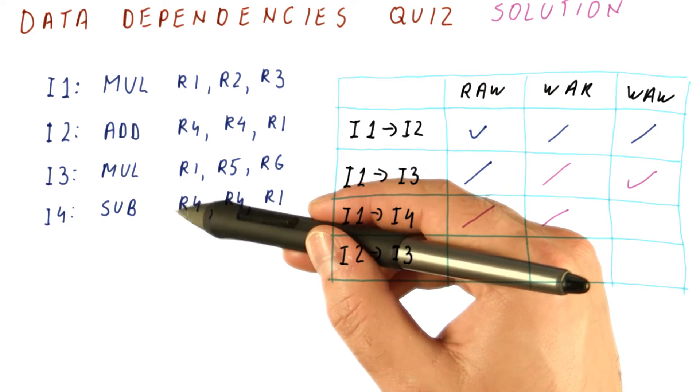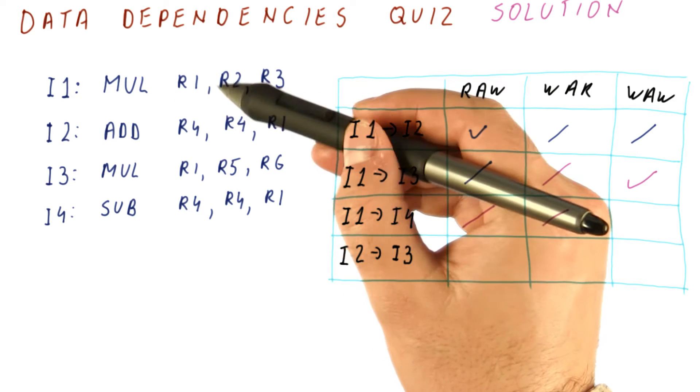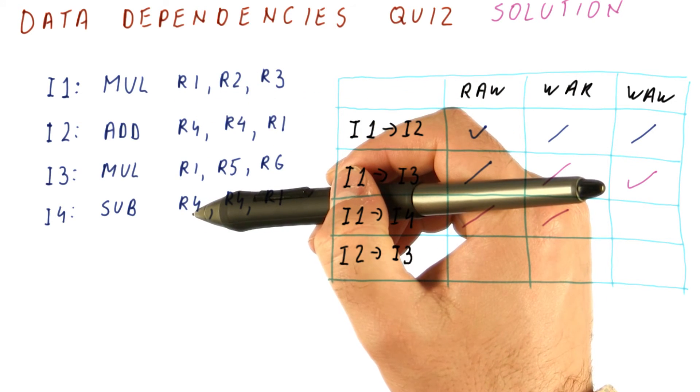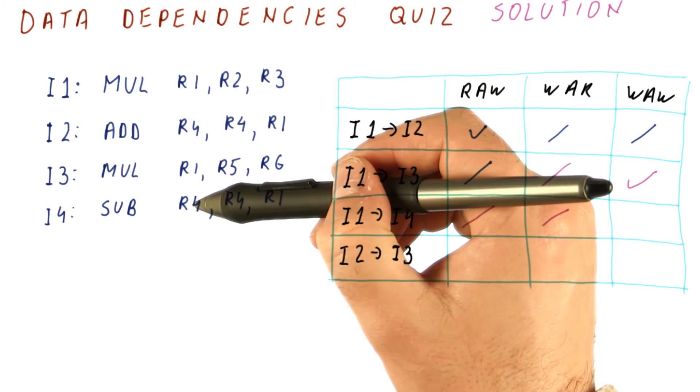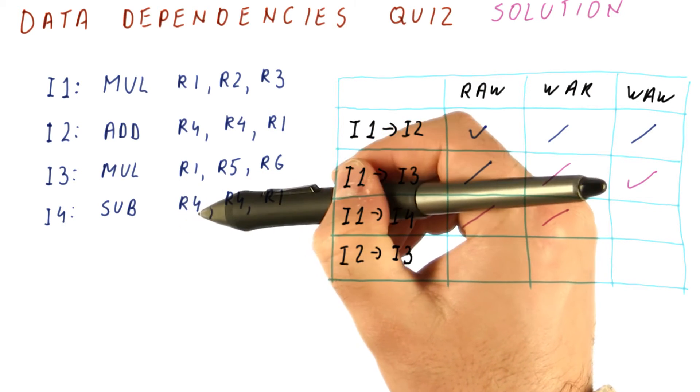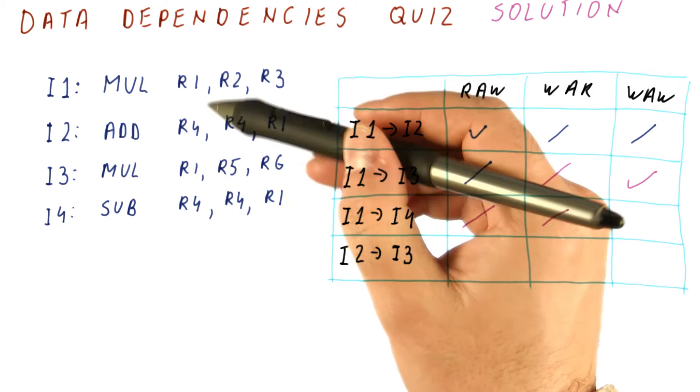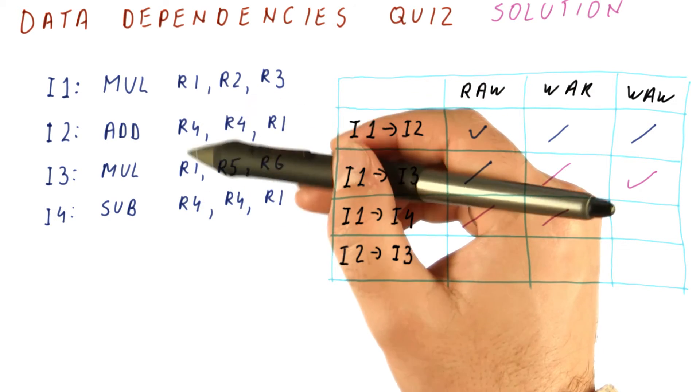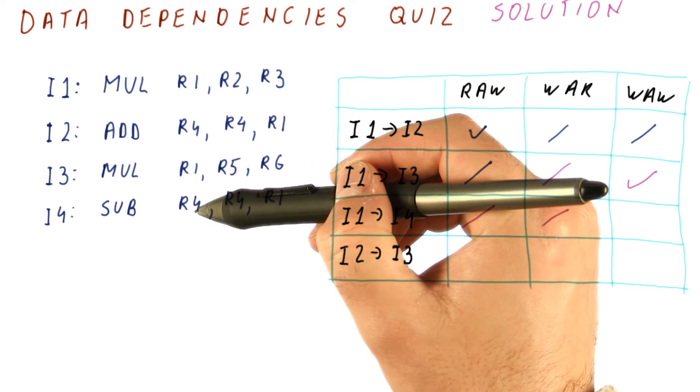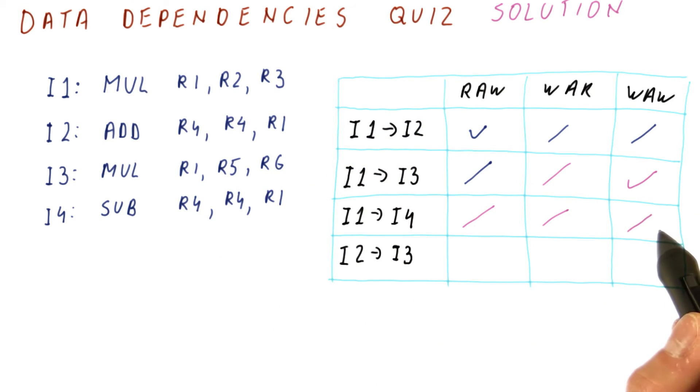One is that I4 is writing to a different register than I1, so there cannot be an output dependence. Another reason is that even if I4 was writing to R1, that would be an output dependence between I3 and I4. So there will be an output dependence from I1 to I3, and then from I3 to I4. But because the write is happening to R4 and here to R1, certainly there is no write after write dependence.